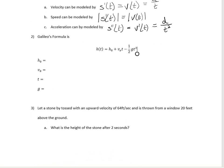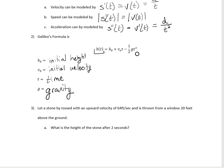Galileo's formula says you can determine the height of an object at time t if you have four things: h-naught (initial height), v-naught (initial velocity), t (time), and g (gravity). Gravity is either 9.8 meters per second squared or 32 feet per second squared depending on your units.